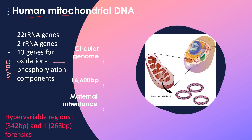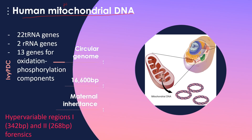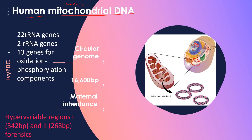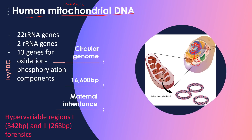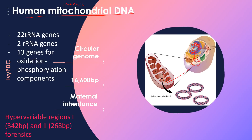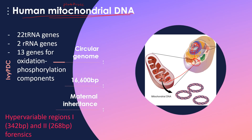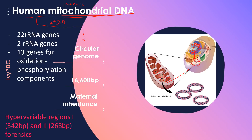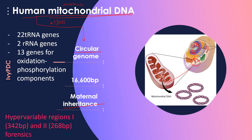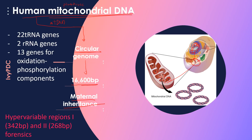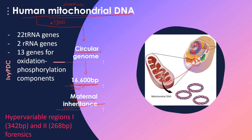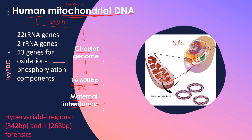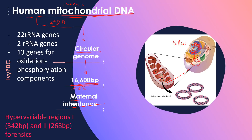Our next topic is the human mitochondrial DNA. Mitochondria is the powerhouse of the cell, located inside the cytoplasm. Although DNA is packed as chromosomes inside the nucleus, there is a small amount of DNA found inside the mitochondria, which we call mitochondrial DNA, abbreviated as MTDNA. In humans, MTDNA is a double-stranded circular molecule that is inherited maternally, with around 16,600 base pairs — a small fraction of the total DNA inside the cell.